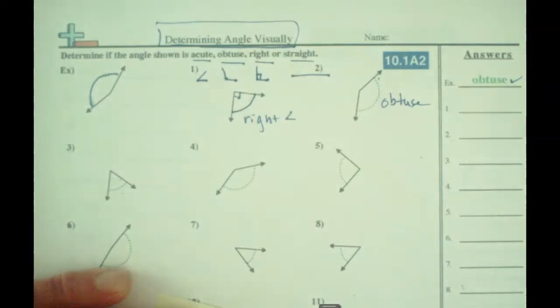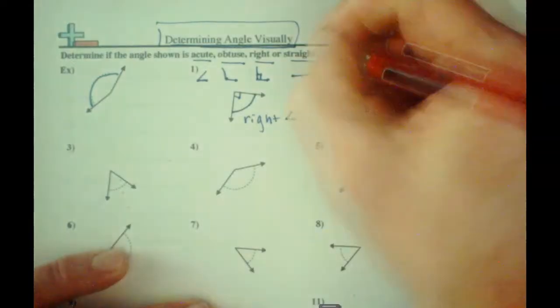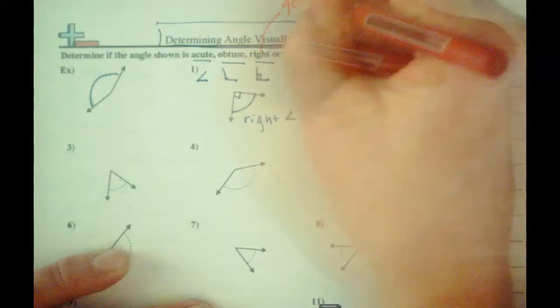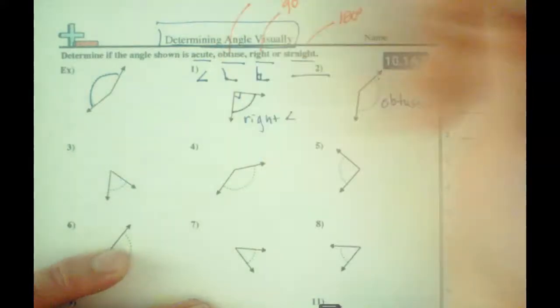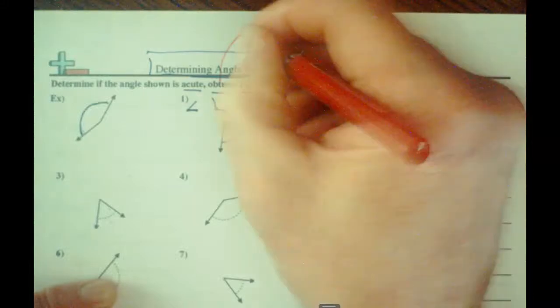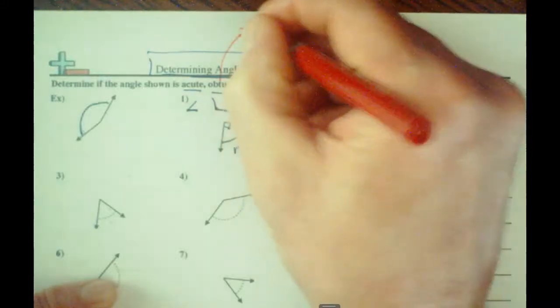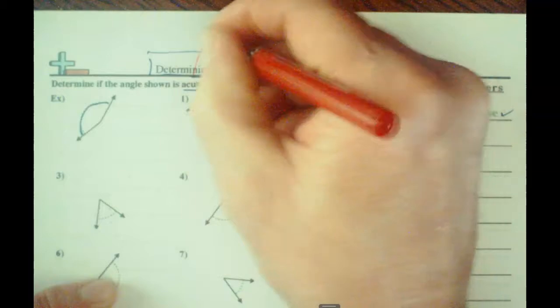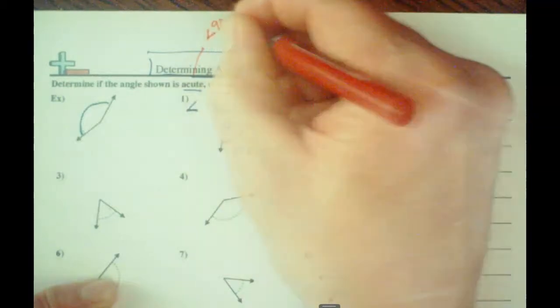Let's just jot these down here. So straight angles are 180 degrees. A right angle is 90 degrees. Obtuse is going to be greater than 90 degrees, and an acute is going to be less than 90 degrees.